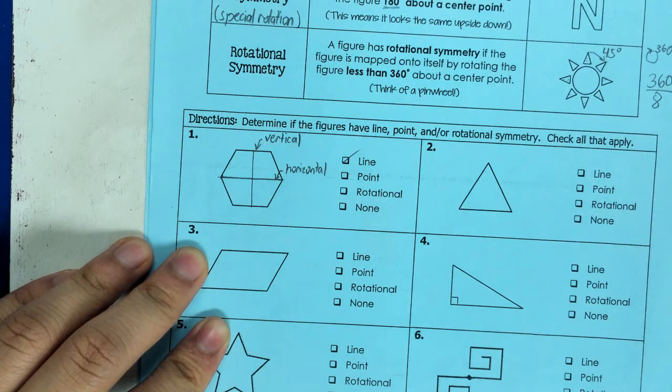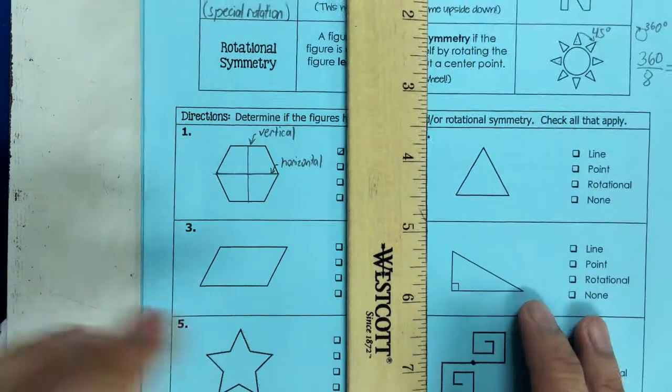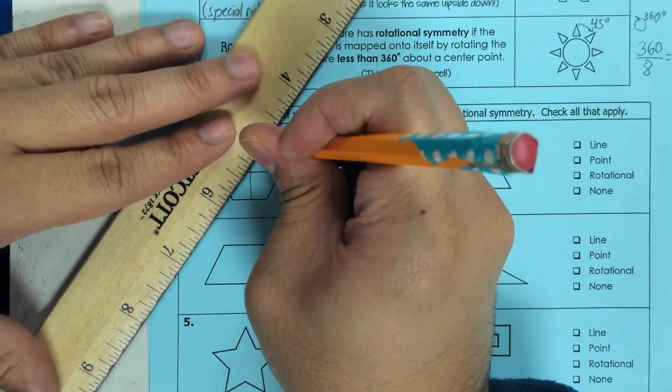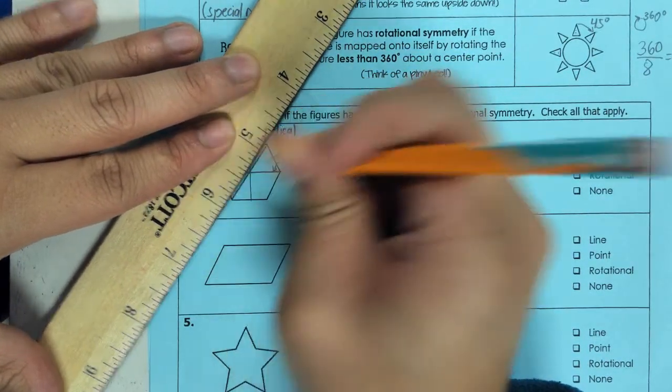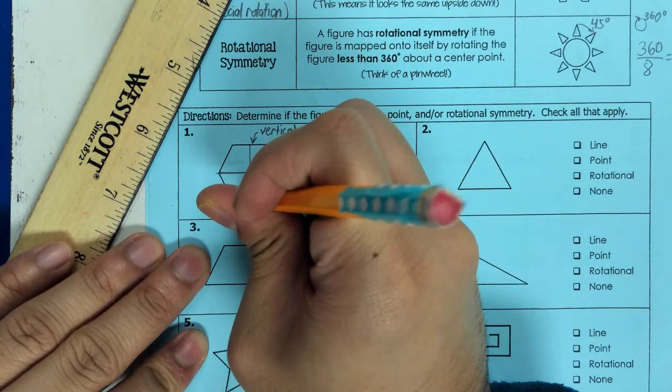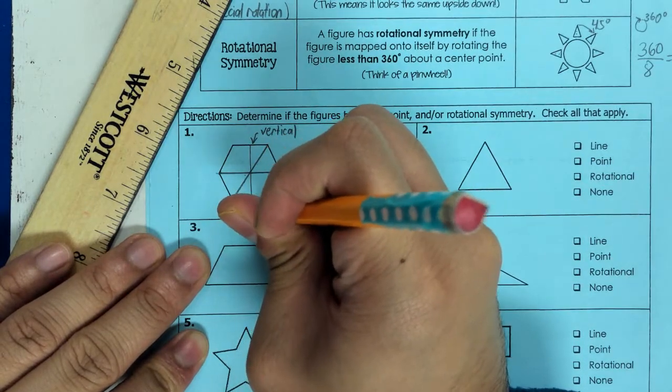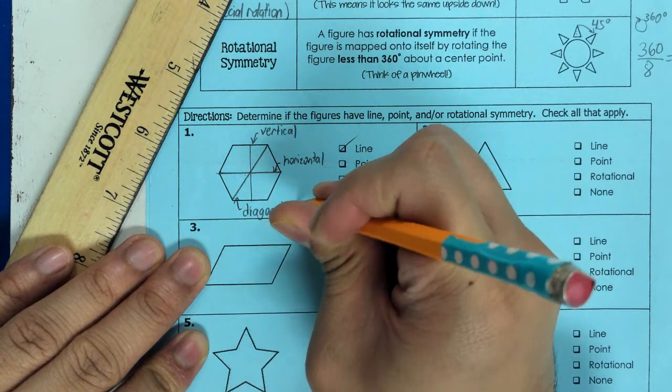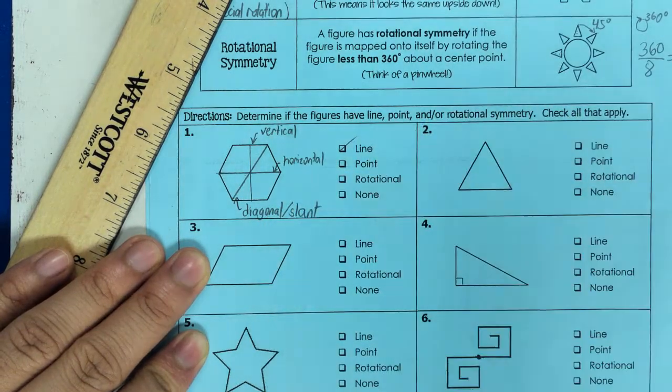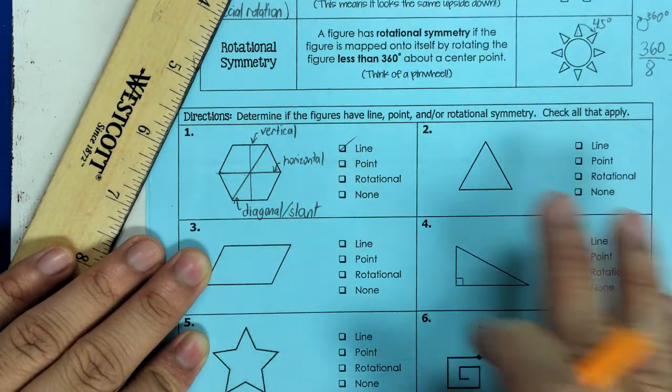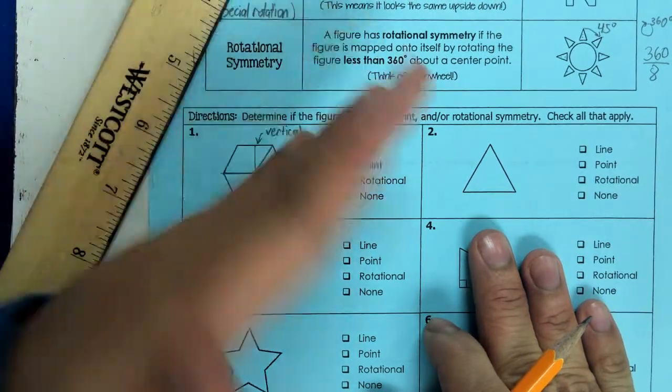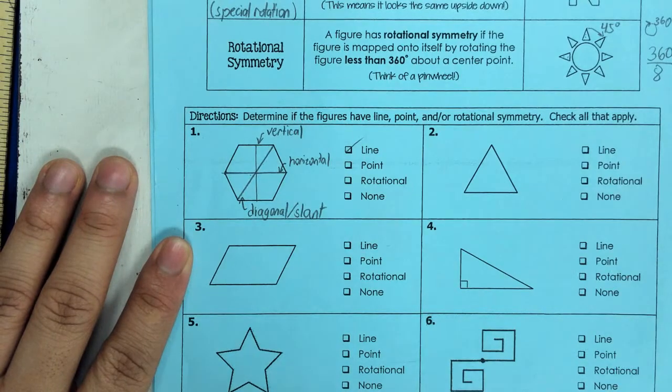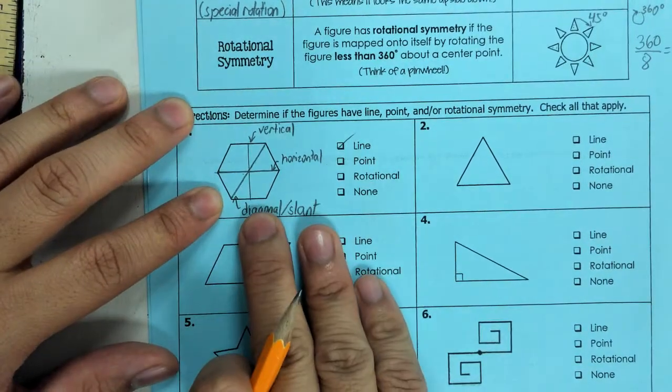And one more way that's harder for people to see: there is a diagonal line of symmetry. I can go this way, or sometimes we call it slant symmetry. Diagonals are harder to see because we're not used to seeing things sideways. So my advice for a diagonal line symmetry: if I turn my paper this way, now it's more apparent that I have a left side matching a right side.